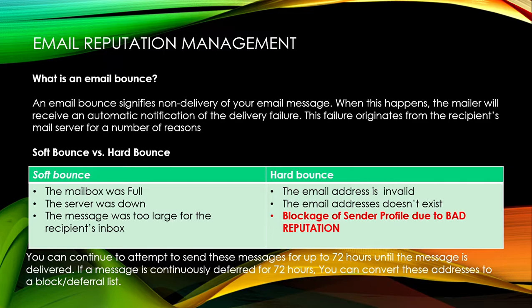When you have soft bounces, our system usually retries again within 72 hours until the message is delivered. If the message continuously fails delivery, the system tags it as a blocked, deferred, or permanent hard bounce — also called NDR. It's not the case that a marketing system will try only once; they will retry after a certain time, such as 72 or 48 hours. If delivery still fails within that span, we must decide whether to mark it as a hard bounce or a completely invalid email.